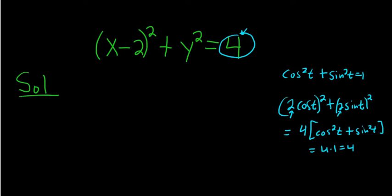So the idea is we want something like 2 cosine t and 2 sine t. So what we'll do is we'll call this piece here 2 cosine t, and we'll call the y piece 2 sine t.